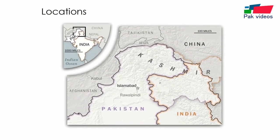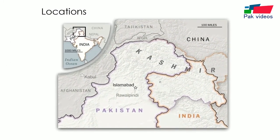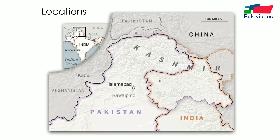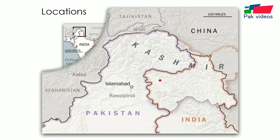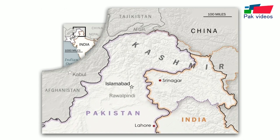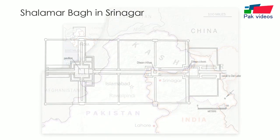Today, there are two different gardens, both of which go by the name Shalamar Bagh. One is in Srinagar, in the Jammu and Kashmir province of India, built by Jahangir in 1619-1620 and completed by Shah Jahan approximately around 1630. The other Shalamar Bagh is located in Lahore, Pakistan, and was built in 1641 for the Mughal Emperor Shah Jahan.